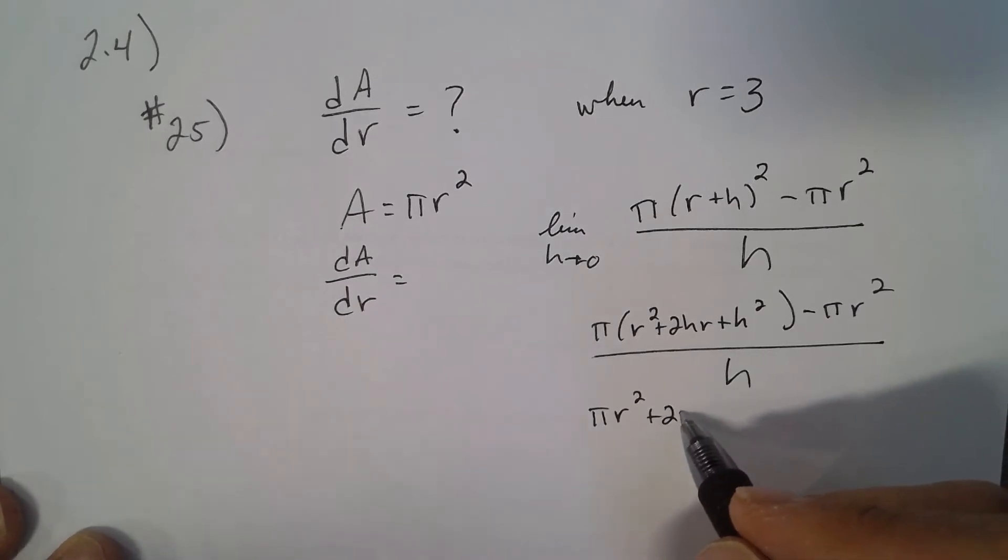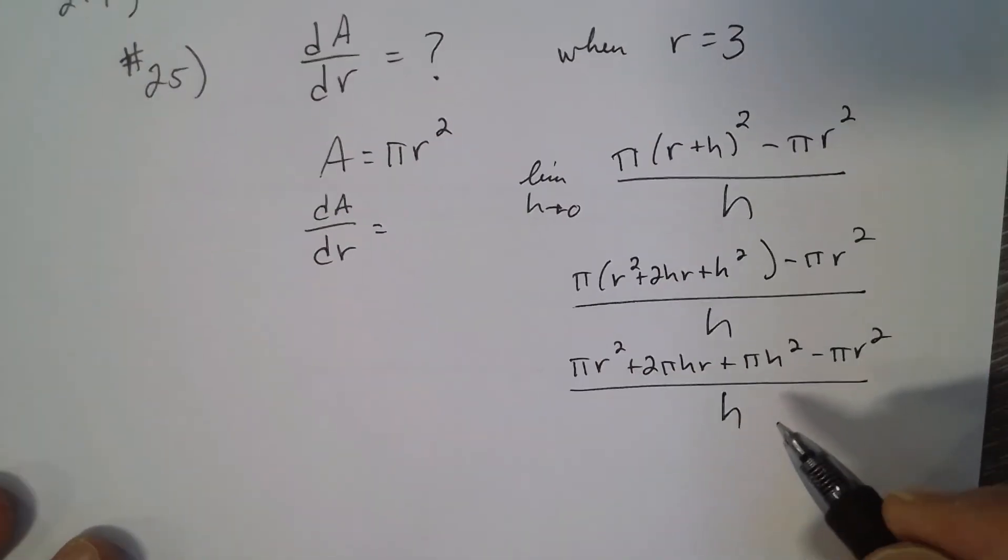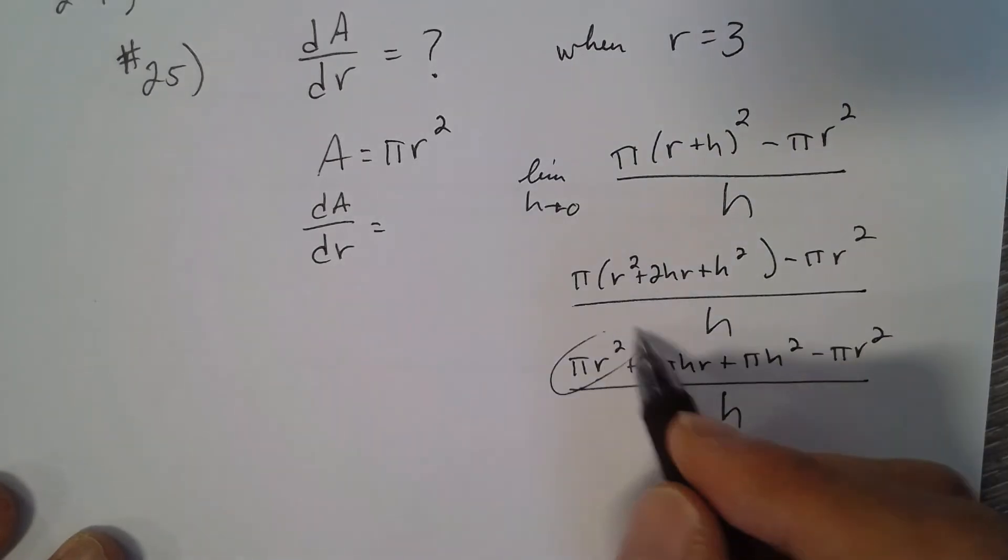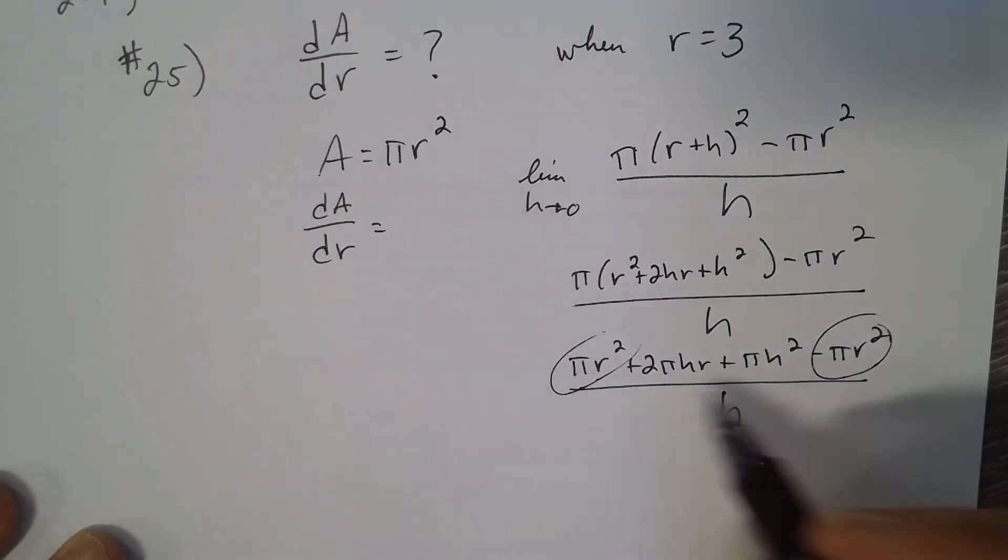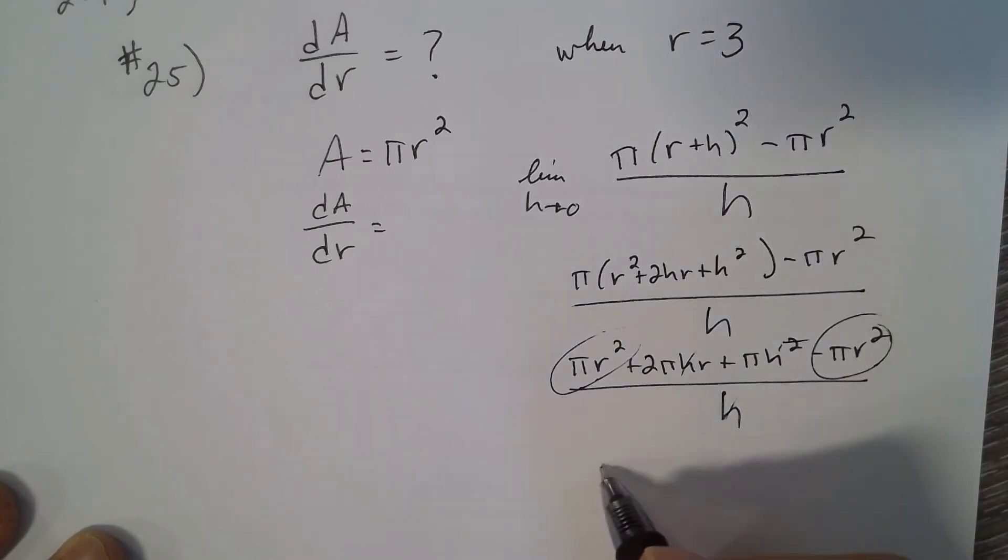This gives 2πhr + πh² + πr². These terms cancel, so you can pull an h out of those three: 2πr + πh.